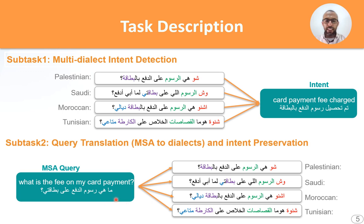For example, the first word 'maa hiya' is translated as 'shu' in Palestinian, 'weish' in Saudi, 'shnu' in Moroccan, and 'shinwa' in Tunisian. Another word, 'al-baataqaati,' is translated as 'baataqa' in most dialects, but in Tunisian it becomes 'karta,' and so on.